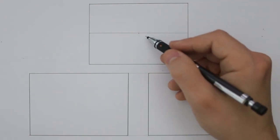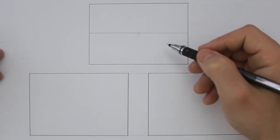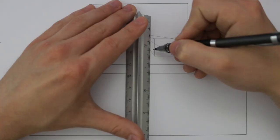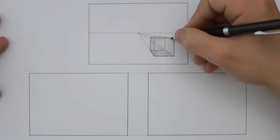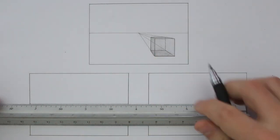Here we have one point perspective with the vanishing point placed in the center of the horizon line. For two point perspective, the vanishing points are placed at either side of the horizon line.